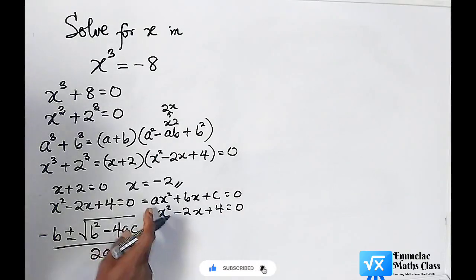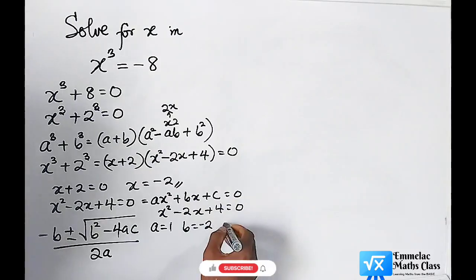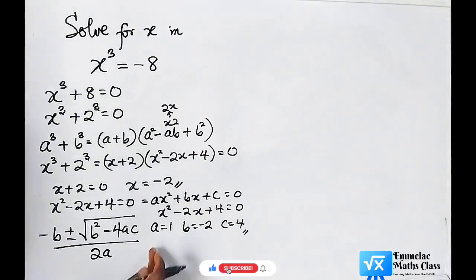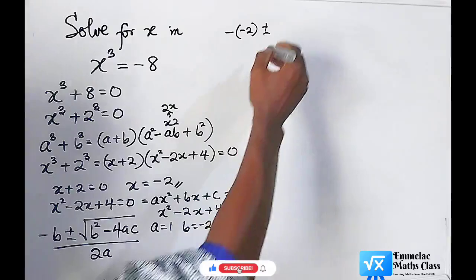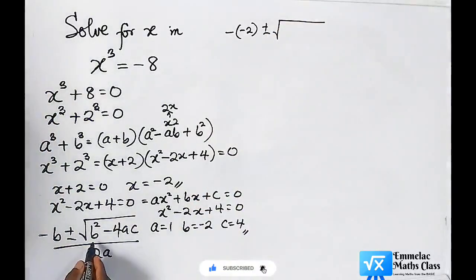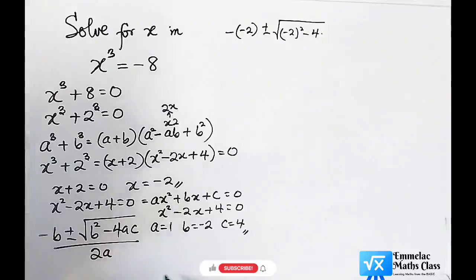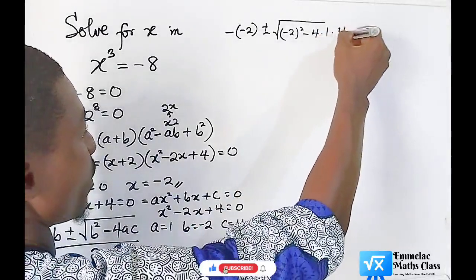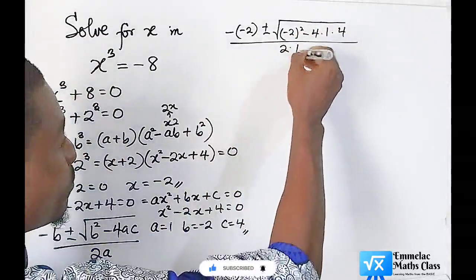Let us now plug in the value of a, b, c into this equation. We have negative b, which is -(-2), plus or minus the square root of b squared (which is (-2)²) minus 4 times a (which is 1) times c (which is 4), all over 2 times a (which is 1).